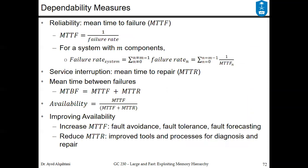We have some dependability measures. One of them is the reliability, which is the mean time to failure (MTTF). MTTF is equal to one over the failure rate. For a system with m components, the failure rate of the system is equal to the summation of the failure rates of its components, and each failure rate of component m can be calculated using this equation — we take the failure rate of n and plug in one over the mean time to failure of it.